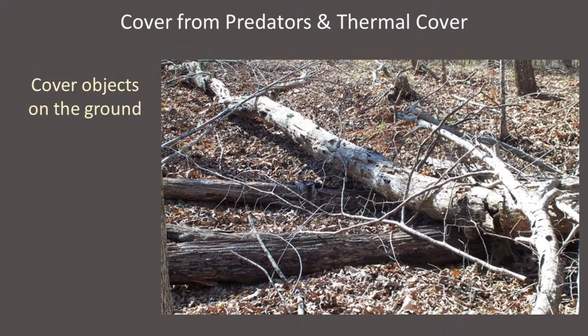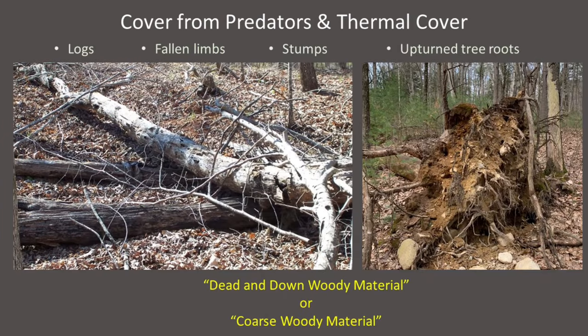Cover objects on the ground meet multiple habitat needs for wildlife, including cover from predators as well as important thermal cover. Common cover objects include fallen logs, rocks, brush piles, and logging slash — the tops and branches of trees left on the ground after timber harvesting. Logs, fallen limbs, stumps, and upturned trees are often referred to collectively as dead and down woody material or coarse woody material. These cover objects are an especially important component of wildlife habitat that should be left on the ground whenever possible.